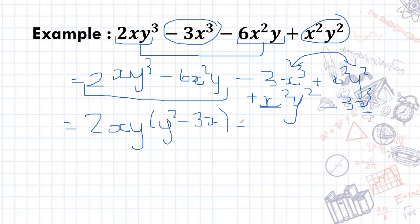So I'm going to have plus x². What I've got left with is y² minus 3x.